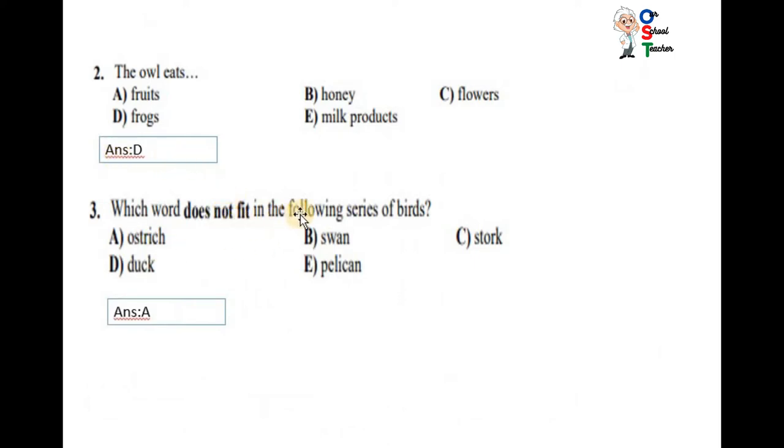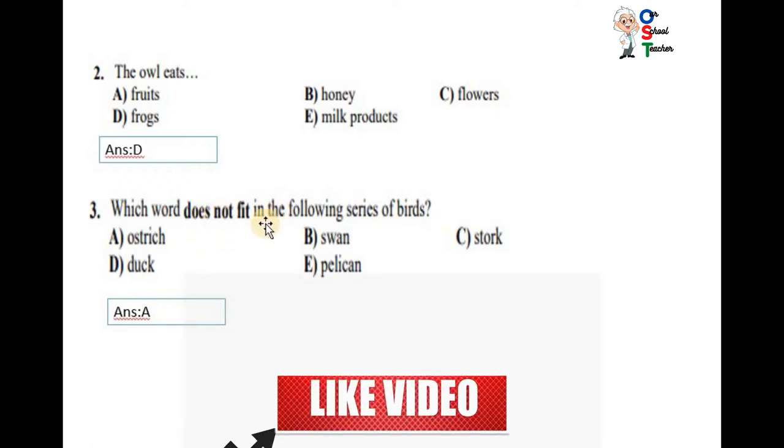Which bird does not fit in the following series of birds? Ostrich, swan, stork, duck, pelican. All are water birds, or you can say they can live in water. But ostrich is a running bird. So A is correct. Does not fit.